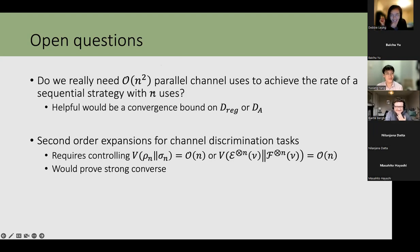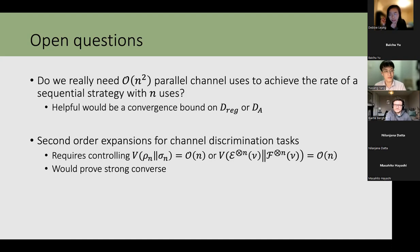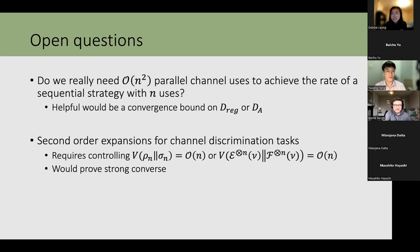[Commenter]: Whether two channels can be distinguished perfectly adaptively was found by Duan, Feng, and Ying in 2009 — there is a criterion. It would be nice to compare with your condition. I think it does not say specifically how many copies you need, but it does say whether the number is finite or infinite.